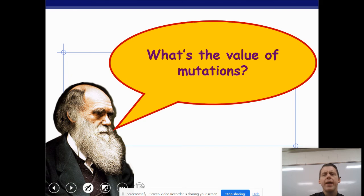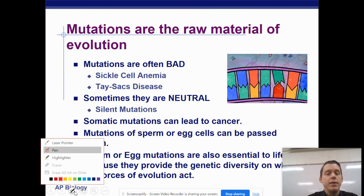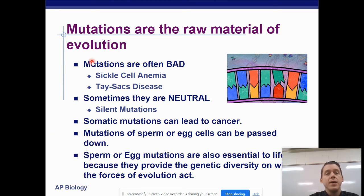So is there value to mutations? Well, mutations are often bad. If you get mutated DNA, that is not a good thing. Mutations can cause diseases like sickle cell anemia or Tay-Sachs disease. Sometimes mutations are neutral, which means nothing happens. It's not bad or good. It's just the same. Somatic mutations can lead to cancer. So a somatic mutation would be one that happens to your skin. And mutations of a sperm cell or an egg cell could be passed down to future generations.